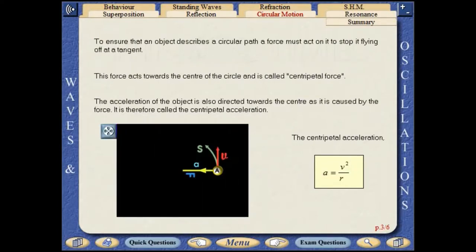To ensure that an object describes a circular path, a force must act on it to stop it flying off at a tangent. This force acts towards the centre of the circle and is called centripetal force.